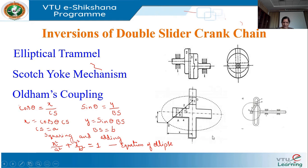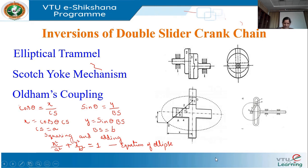This is the instrument for drawing an ellipse. The slotted frame A is fixed. We will consider a tracing point S on this link. As the slide blocks B and C move along the respective slots, the point S will trace an ellipse. This is the tracing point.